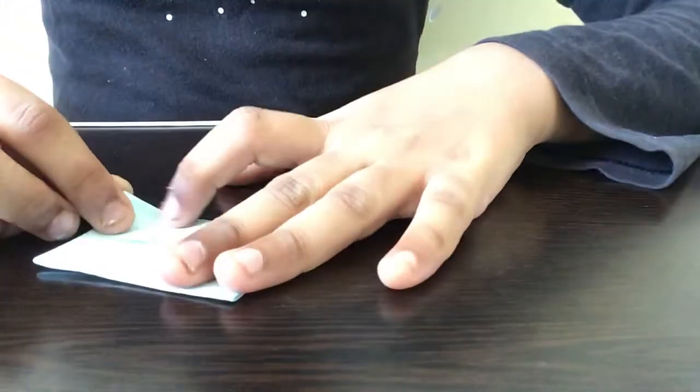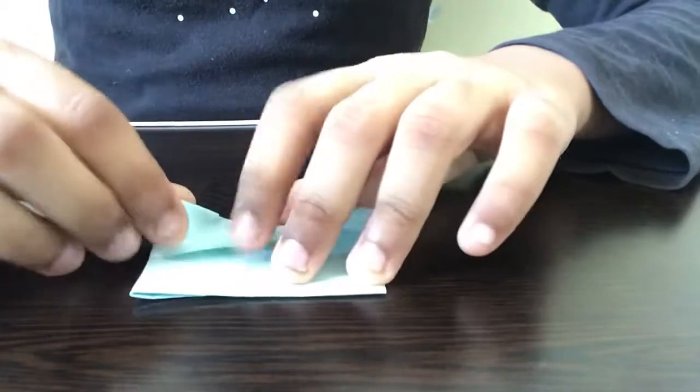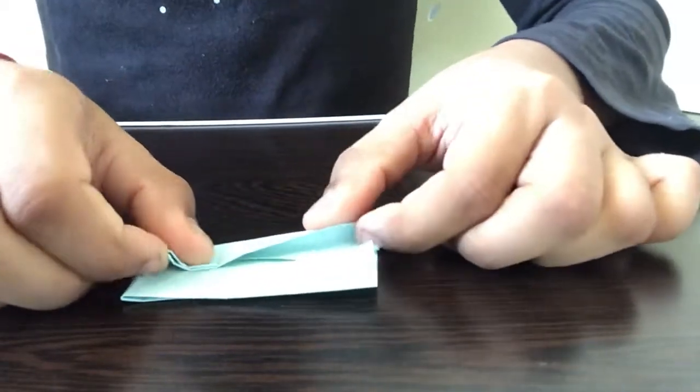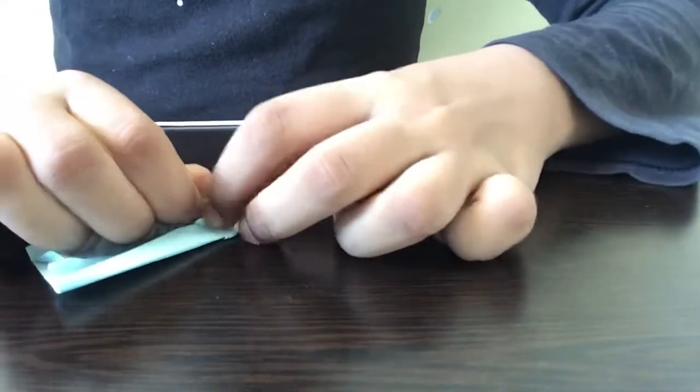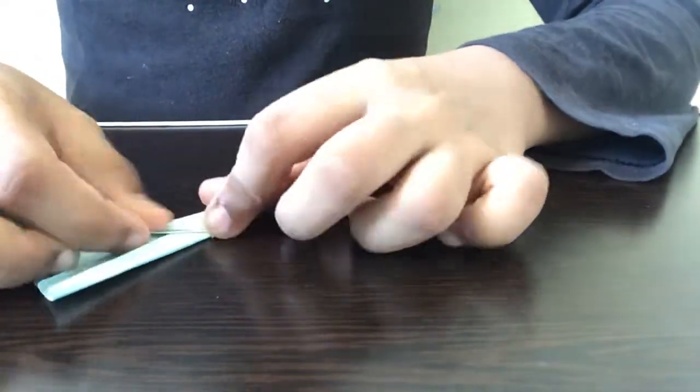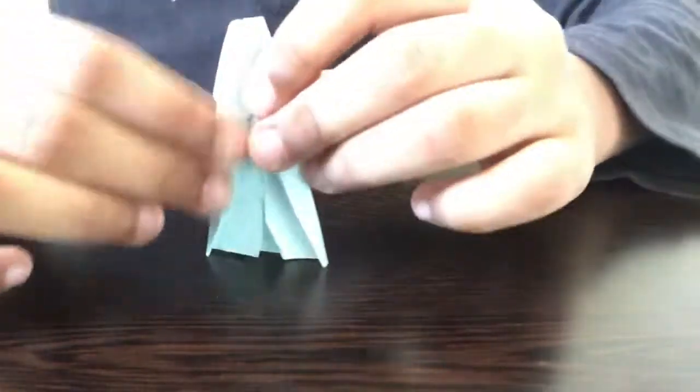Next, flip the paper to the opposite side and fold a little bit on the top part like this. Flip it back to the original side. Now take the top part of the paper and fold it a little bit past the middle line. Repeat the same step on the opposite side of the paper. Now we'll have a structure like this.